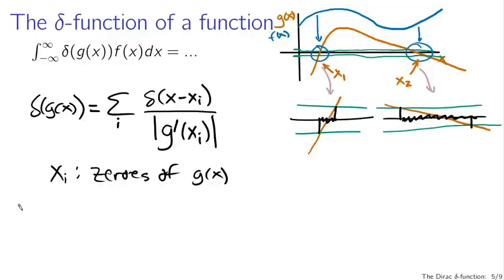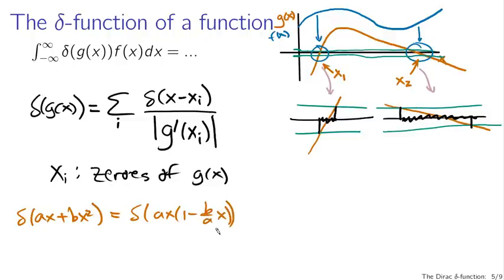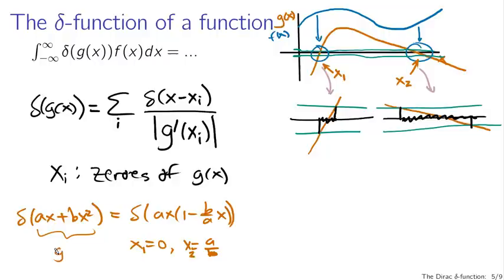The formula is: delta of g of x equals a sum over i of delta of x minus x sub i, divided by the absolute magnitude of g prime evaluated at x sub i, where the x sub i are the zeros of g of x. To give an example, consider delta of ax minus bx squared. I can factor this as delta of ax times 1 minus b over ax, which has zeros at x equals 0 and x equals a over b.